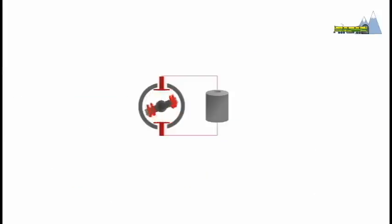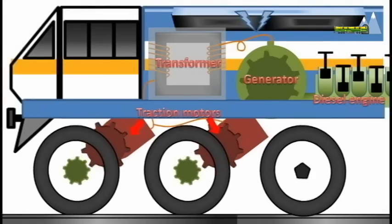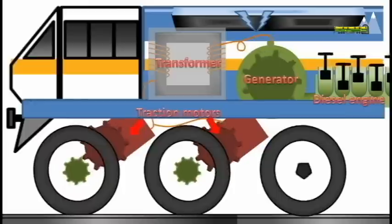An electric motor can provide maximum torque at very low RPMs. Therefore, a diesel locomotive uses an internal combustion engine to drive a generator that produces electricity.